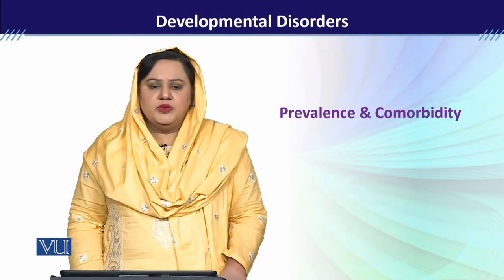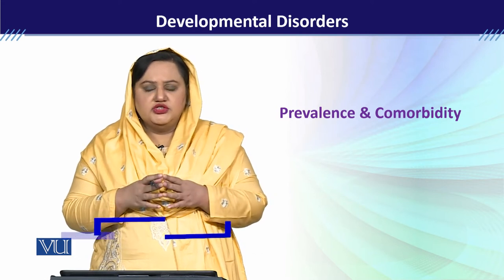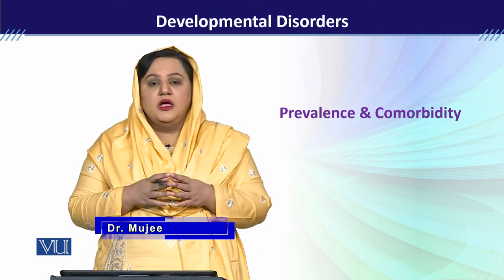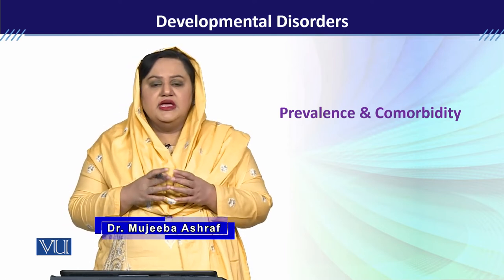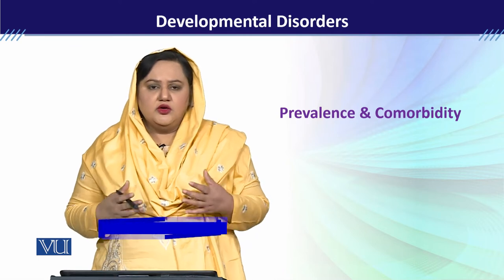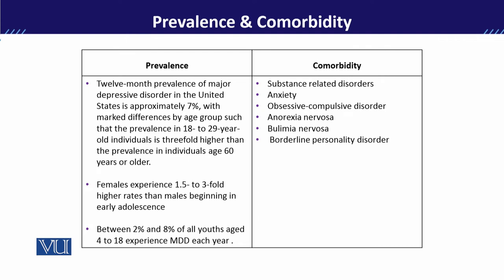Now we will look at major depressive disorder — its prevalence in the general population, in adolescence, and the prevalence rate. The 12-month prevalence of major depressive disorder in 18 to 29 year old individuals is reported at 7%.